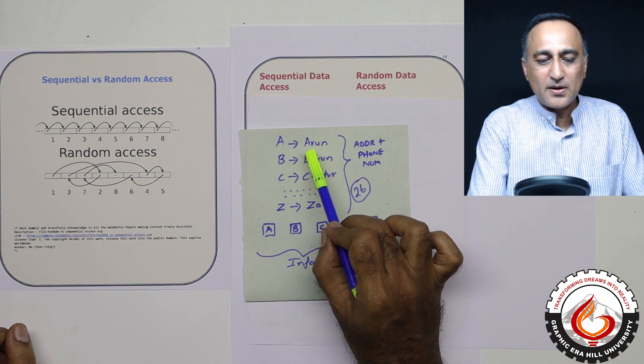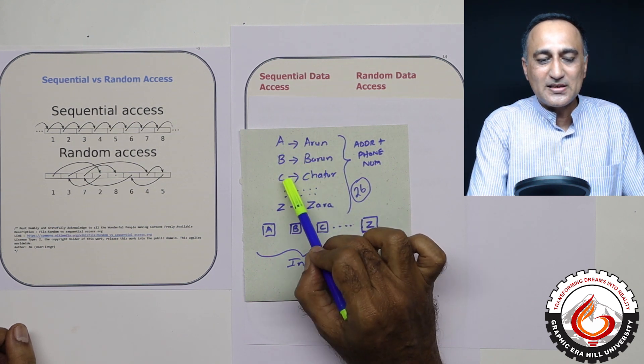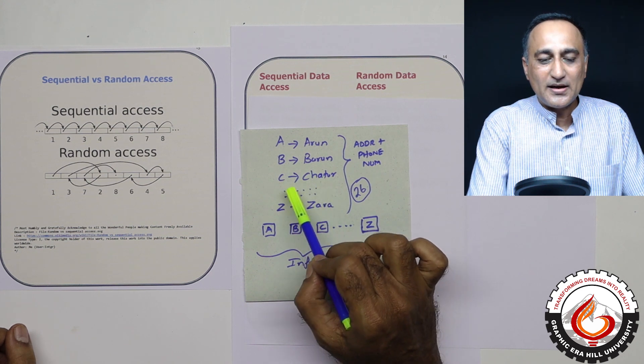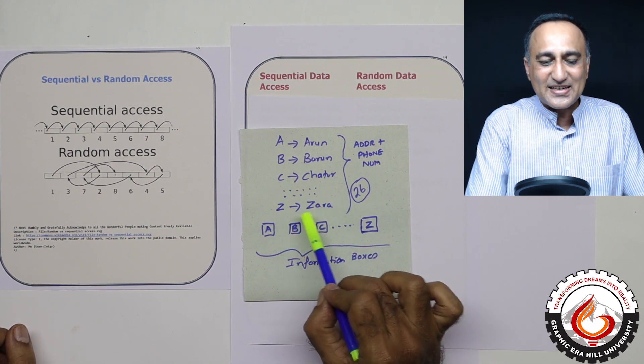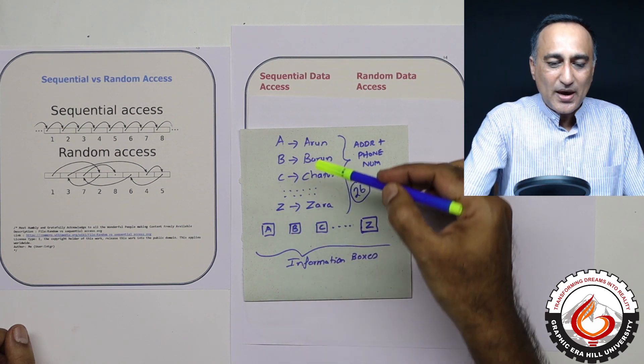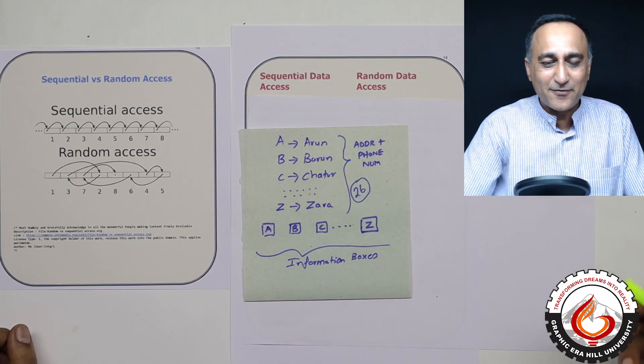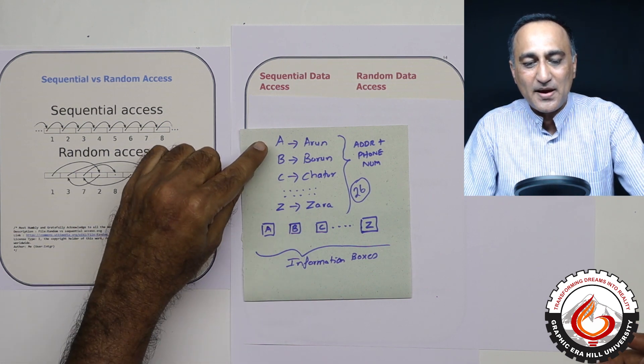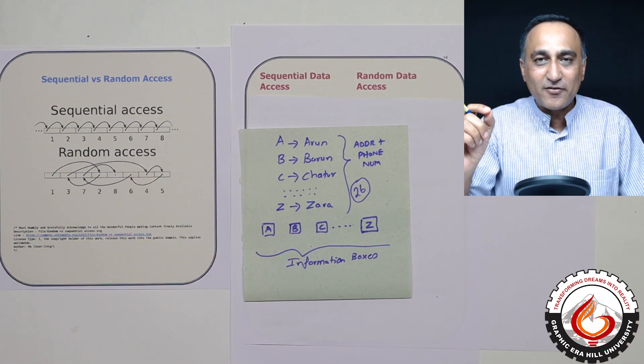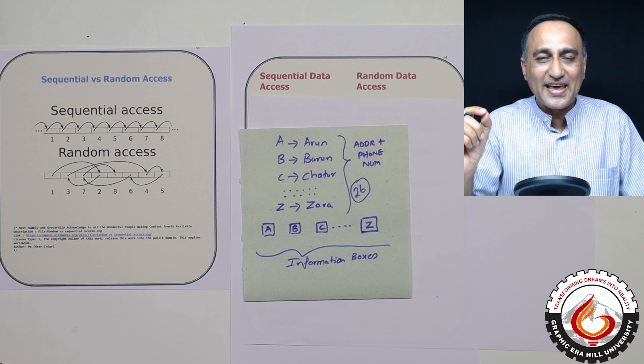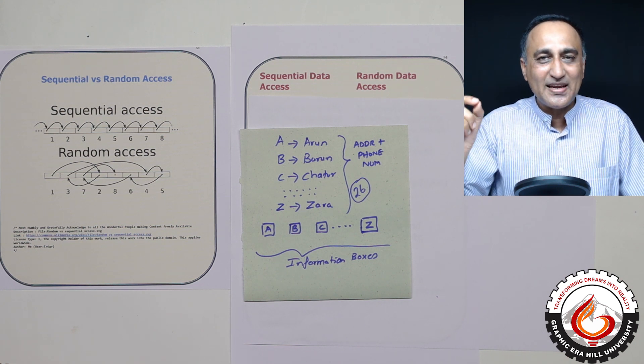For example, A is Arun. My second friend B is Barun. C is Chatur. D is somebody and last Z is Zara. So this way I have only 26 friends with all 26 different names and each one of them having the first alphabet starting from A to Z in their names.